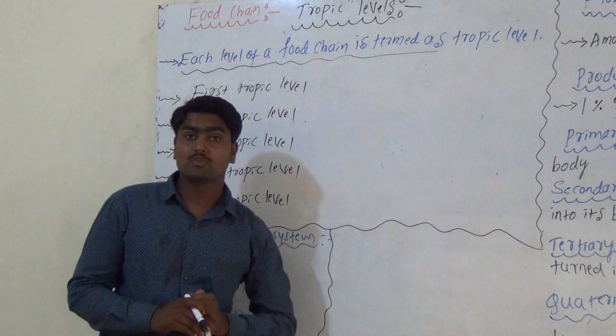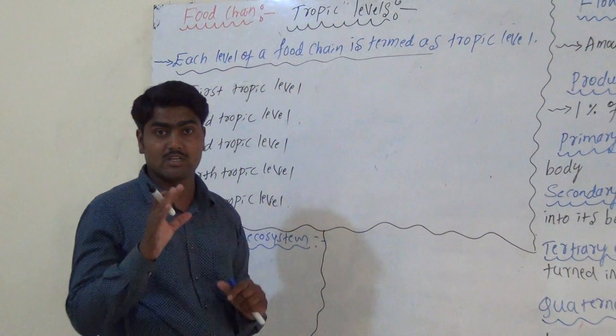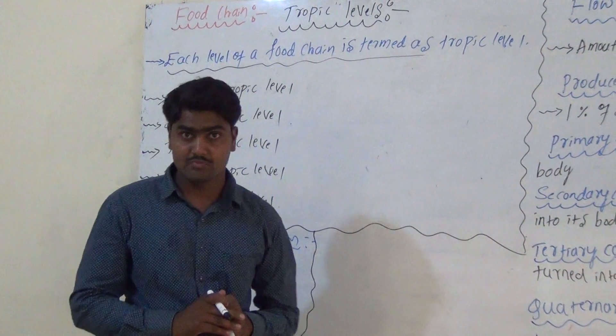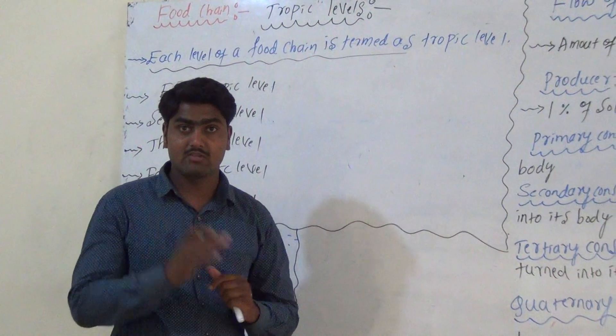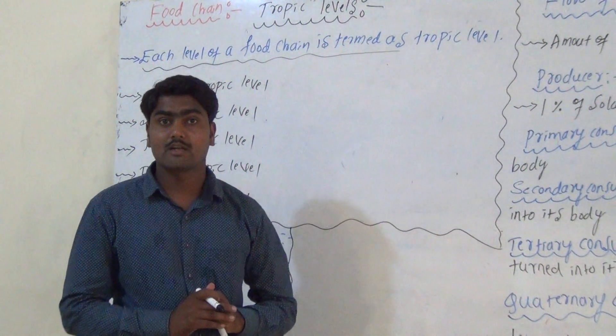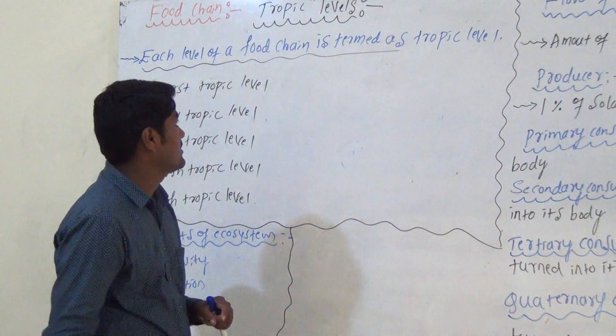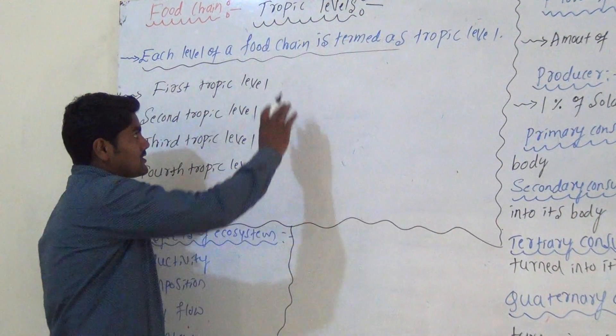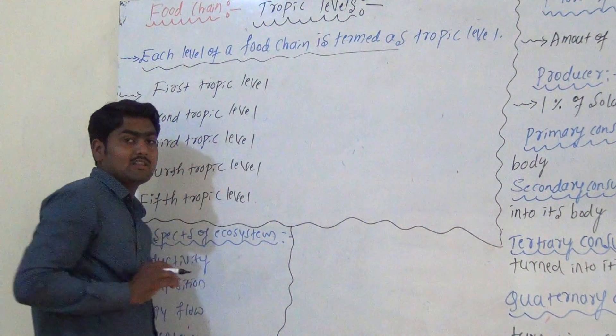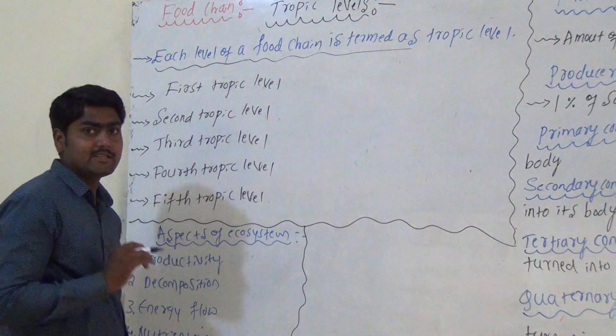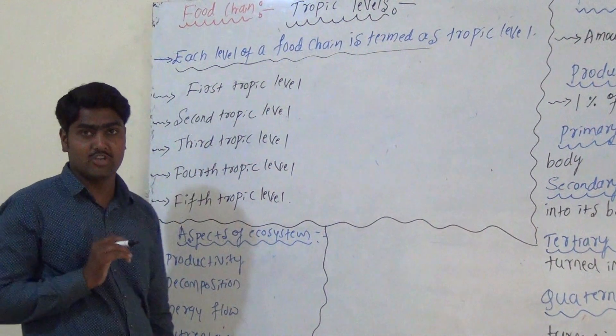There are 2 types of food chain: first one is called the grazing food chain, and second one is called the detritus food chain. So a Trophic Level is nothing but each level of a food chain.